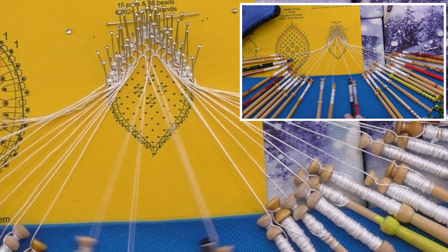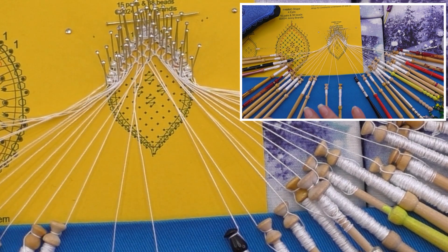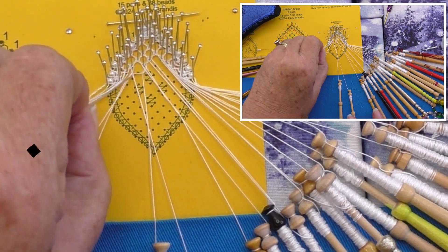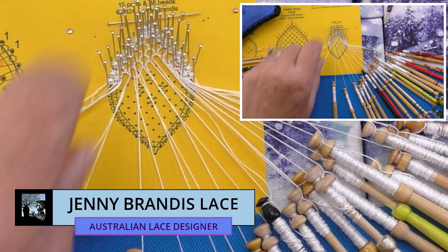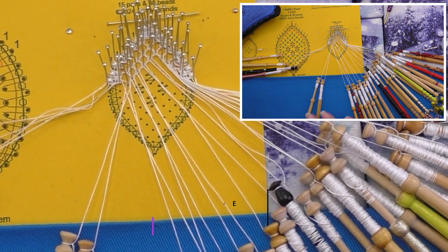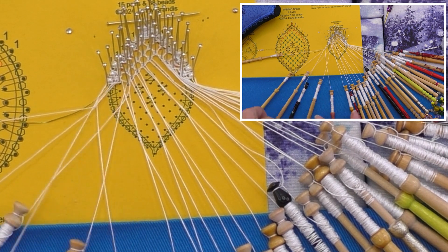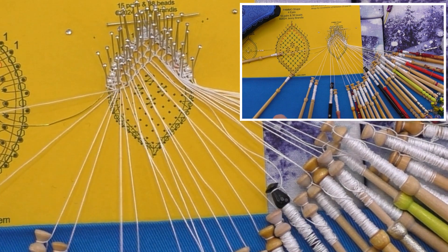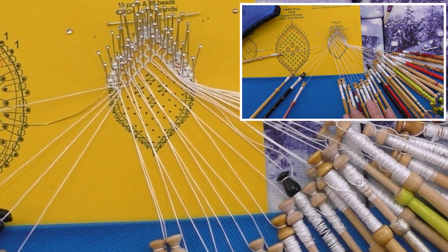Work the top pin in half stitch, pin, half stitch. With the rest of the incoming pins I did half stitch, pin, half stitch and added two more twists on the inner pairs. Anchor the row to the foot side in cloth stitch and add a twist to the inside pair before laying it aside.